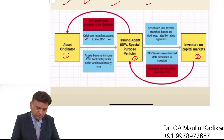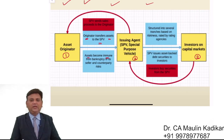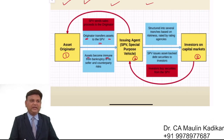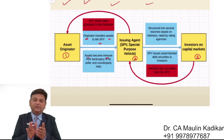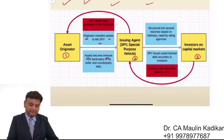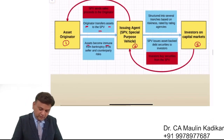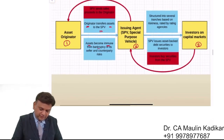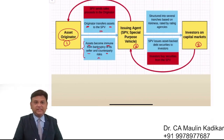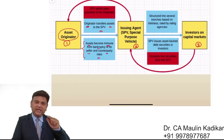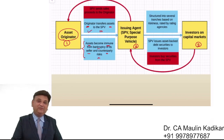Assets become immune — what does immune mean in simple language? It means assets transferred from the originator to the special purpose vehicle are protected from the bankruptcy of the seller and counterparty risk. For example, if HDFC Bank defaults, existing lenders have no right over these assets.